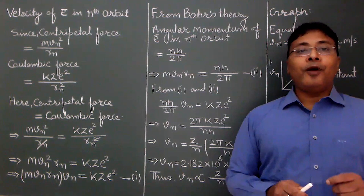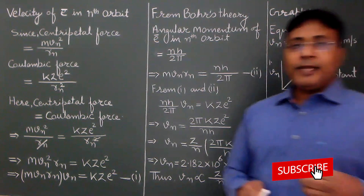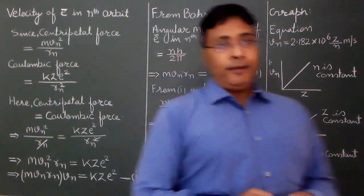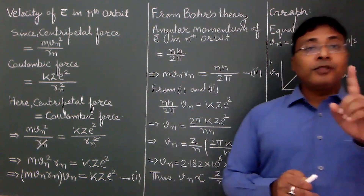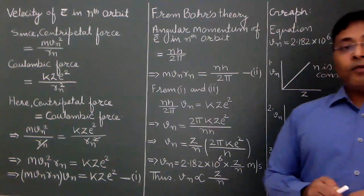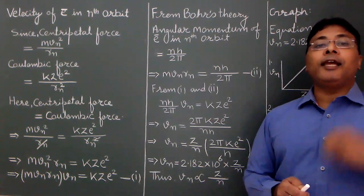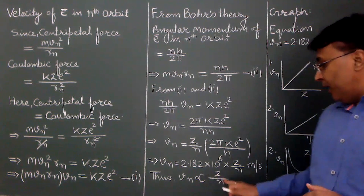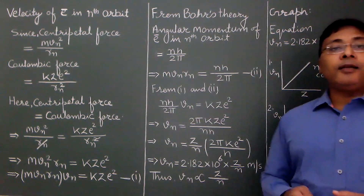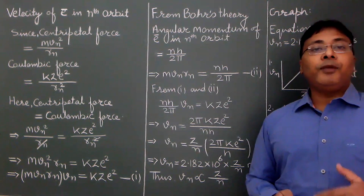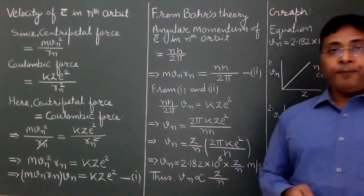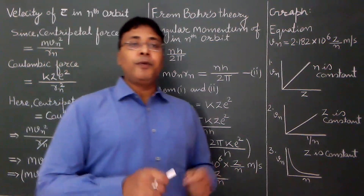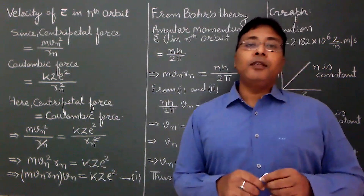Now for applications: suppose the velocity of the electron in the first orbit of hydrogen is x m/s — for hydrogen z=1, first orbit n=1. In the second orbit of hydrogen, z is still 1 but n=2, so velocity = x/2. Third orbit: x/3. Fourth orbit: x/4. Now keeping n constant and varying z — for He⁺ first orbit, z=2 and n=1, so velocity = 2x.